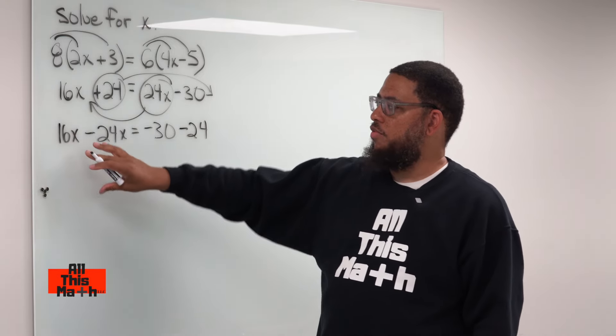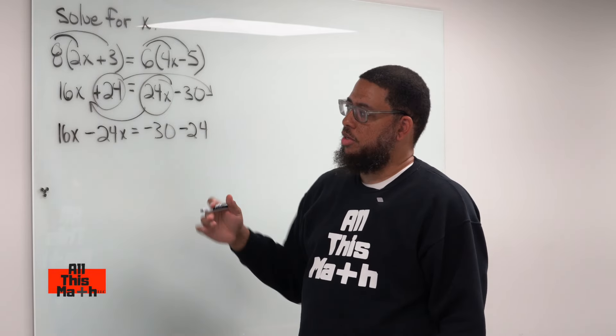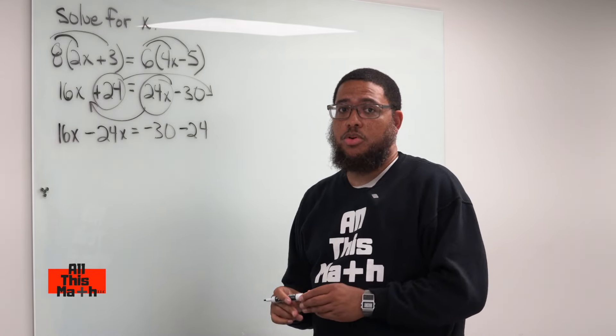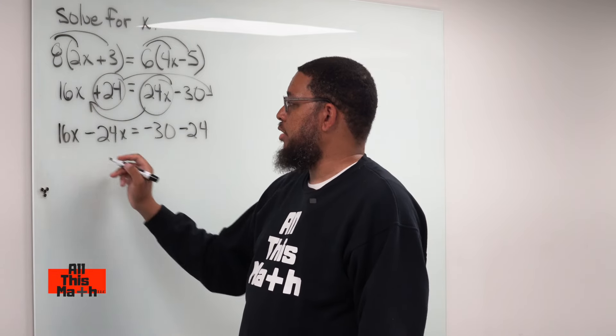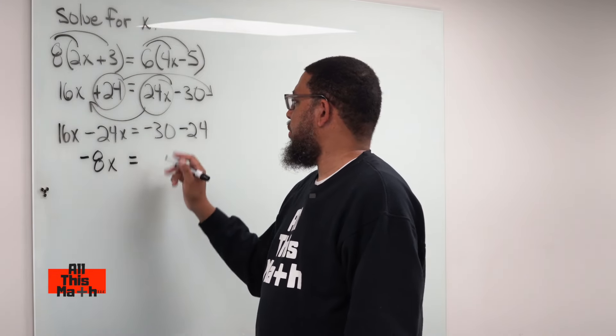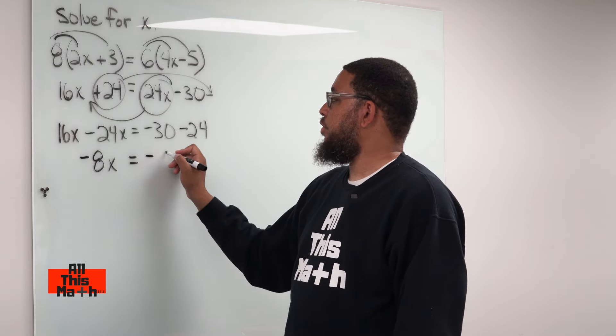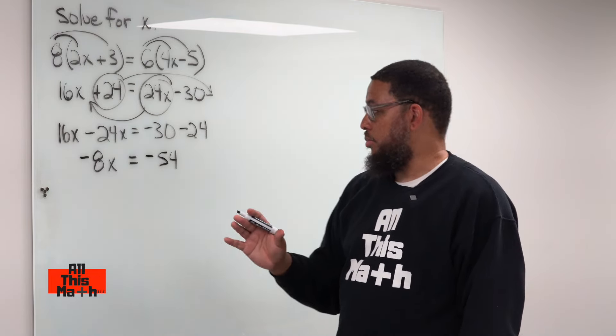So now, because we have all our x's together, we have all our constants together, we can just combine them. So 16x minus 24x is like doing 16 minus 24. 16 minus 24 is negative 8, so we got negative 8x. Bring your equal sign down. Then we got negative 30 minus 24, which is negative 54. We have to know how to add and subtract negative numbers.